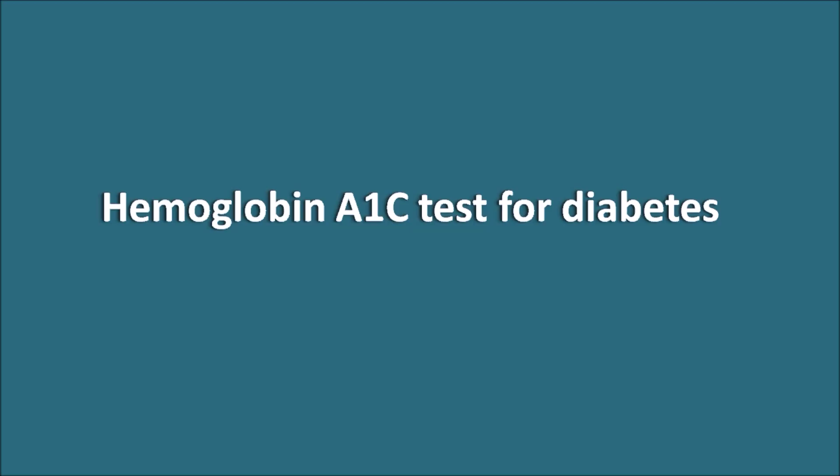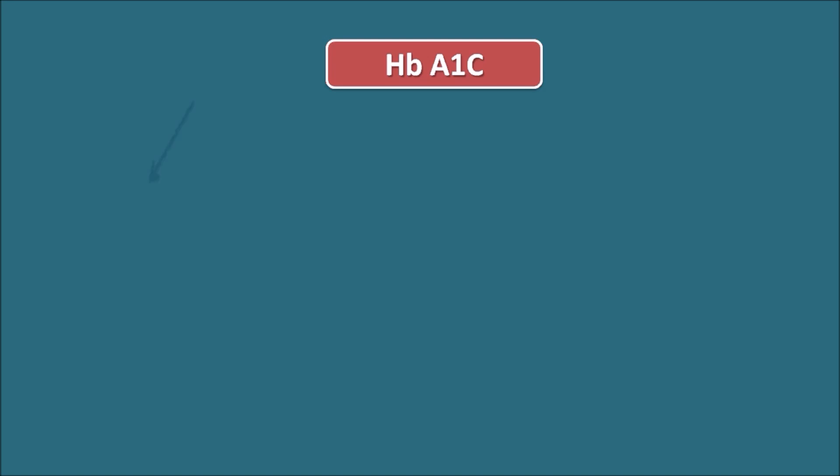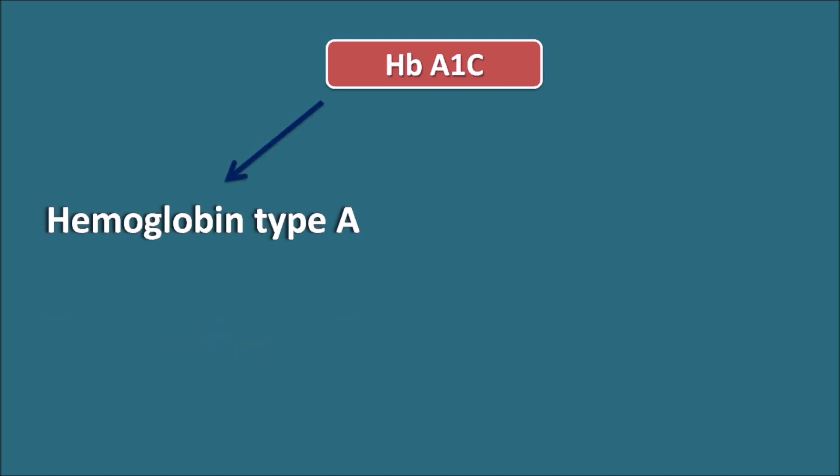Hemoglobin A1c test for diabetes. The HbA1c test includes the estimation of two parameters. The first one is the hemoglobin type A, and the second one is the estimation of the glucose.